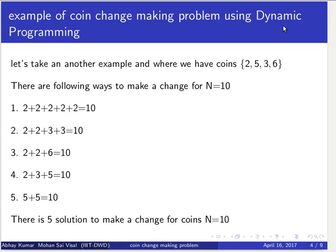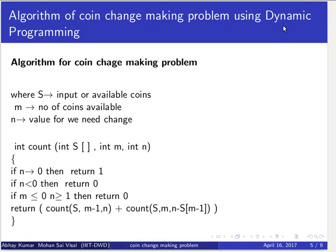So there are 5 ways to make change for n equals 10. Now let's look through the algorithm to understand these problems. In the algorithm for the Coin Change Making Problem, S is defined as the input or available coins, M is defined as the number of coins available, and N is the value for which we need change.